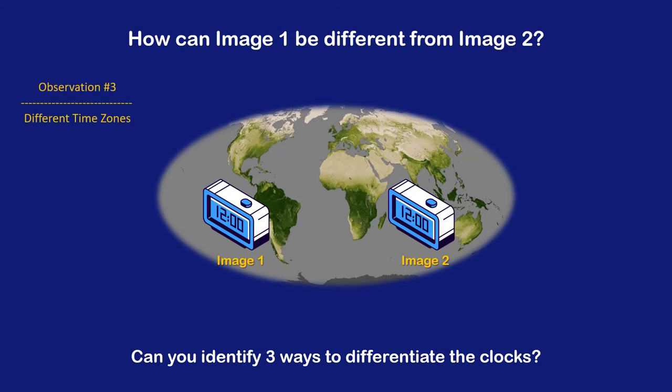Observation three: different time zones. We will use the time zones to uncover the difference between each clock. Obviously, if one clock is in a different time zone, then the other clock should have a different time.